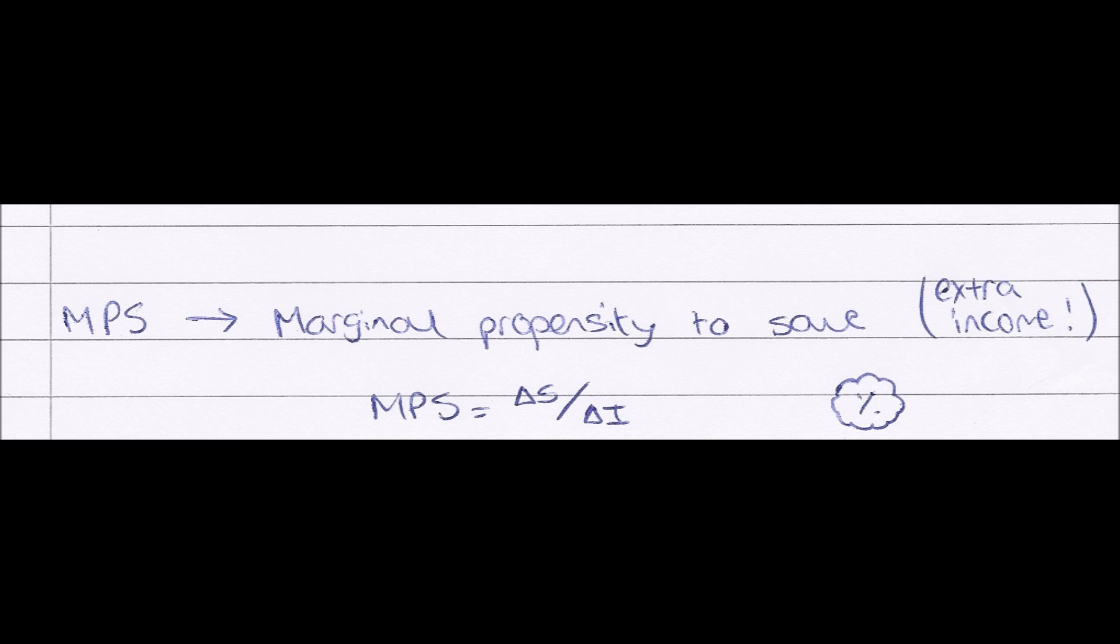We work this out by the formula MPS equals change in S, change in savings, the change in the amount that we save, divided by change in income. So the change in the amount we get in every month. And again, this represents a percentage.